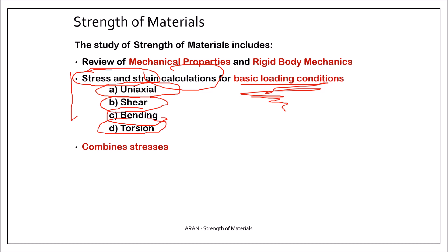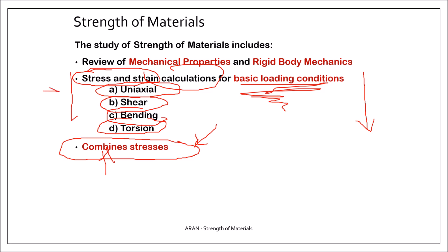Once we finish these four basic loading conditions, we will investigate what happens when these basic loadings act at the same time on the same member. We call this combined stresses — especially when you have more than one type of loading, for example, a shaft with uniaxial and torsion loading. This is a combined loading condition, and in this case we must be able to calculate the combined stresses.